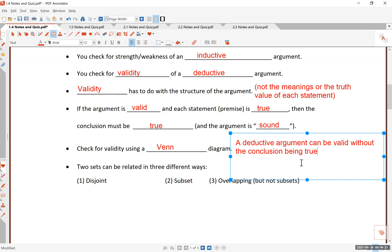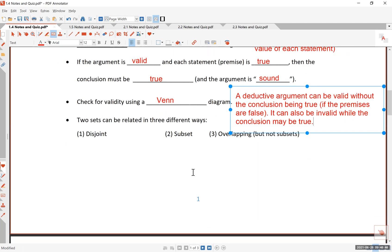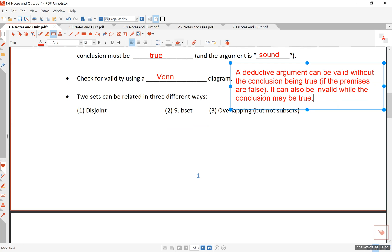So a valid argument can have a wrong conclusion. And this happens if the premises or these statements are false. We will see those in a minute. It can also be invalid while the conclusion may be true. So the truth value of the conclusion cannot determine the validity. That's the point I am saying. Yeah, I know it's confusing. Let me go ahead and draw some pictures. And I will be able to explain these things in more details.